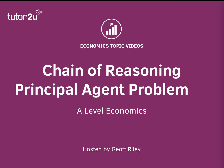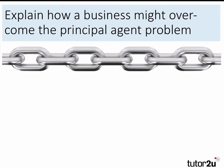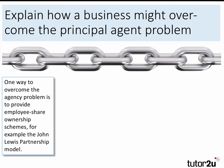So how can we overcome this? The key is to think about the principal agent problem and how we can overcome it. Here's our question: explain how a business might overcome this problem. We're looking for simple, clean and clear chains of reasoning. I'll go through two with you in this video.